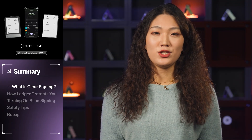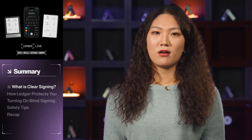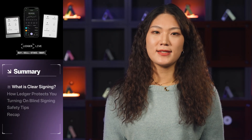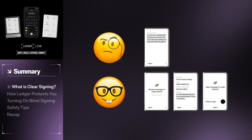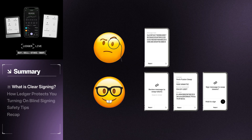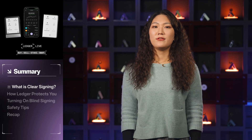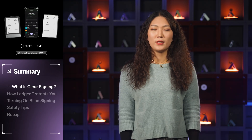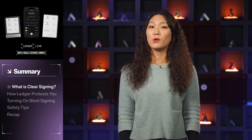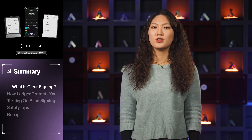Clear signing is the answer to the issue of blind signing, so it's worth explaining what blind signing is. Blind signing occurs when you're asked to confirm a transaction you don't understand. If the details of the transaction are displayed as a series of numbers and letters that you can't interpret, but you confirm the transaction anyway, you are blind signing. Even though this is common in Web3, it is a major problem because you don't know if the transaction allows the smart contract you're interacting with to take your assets.